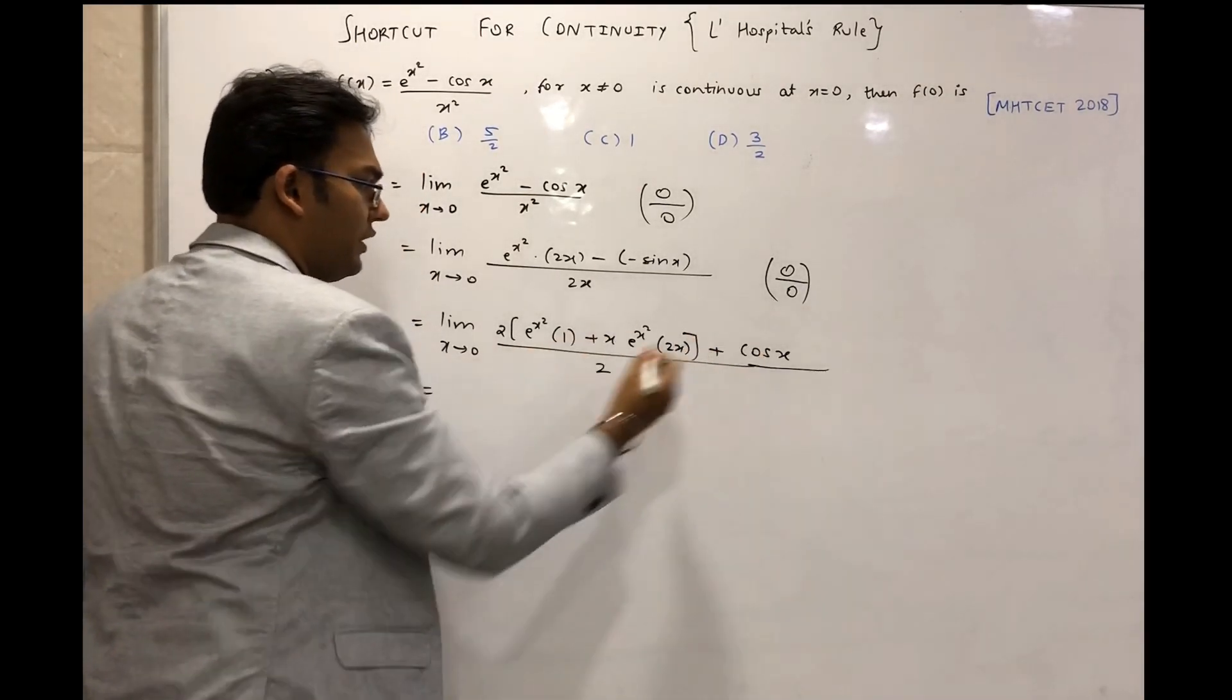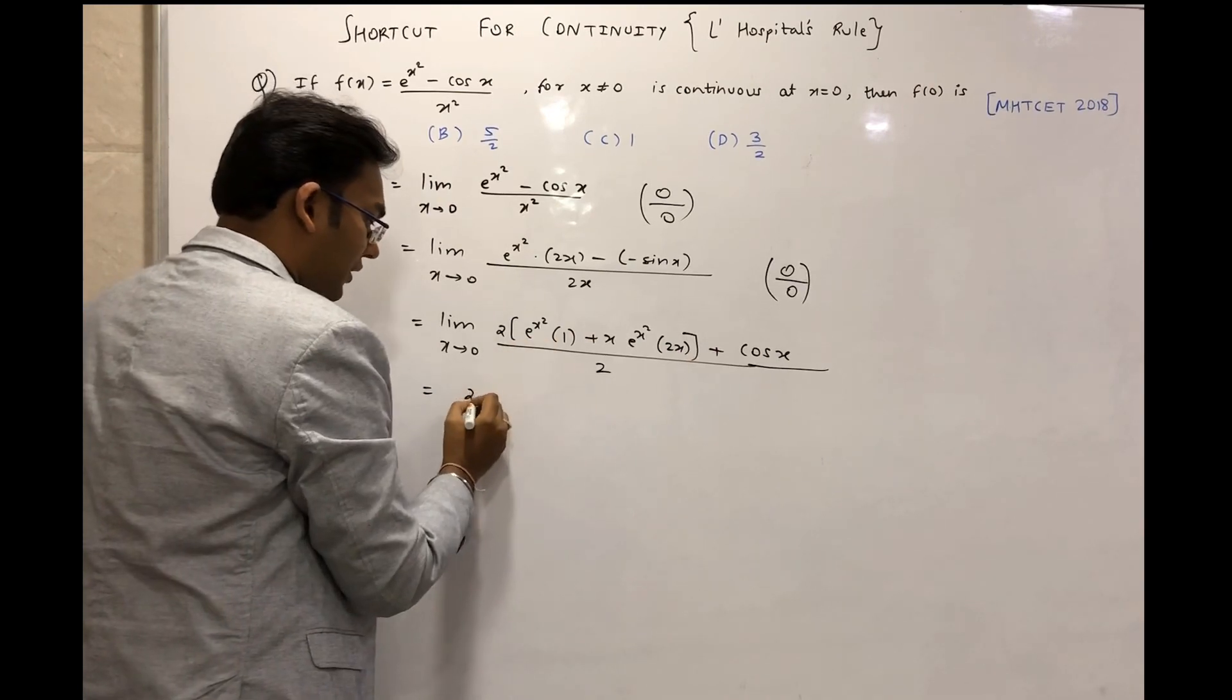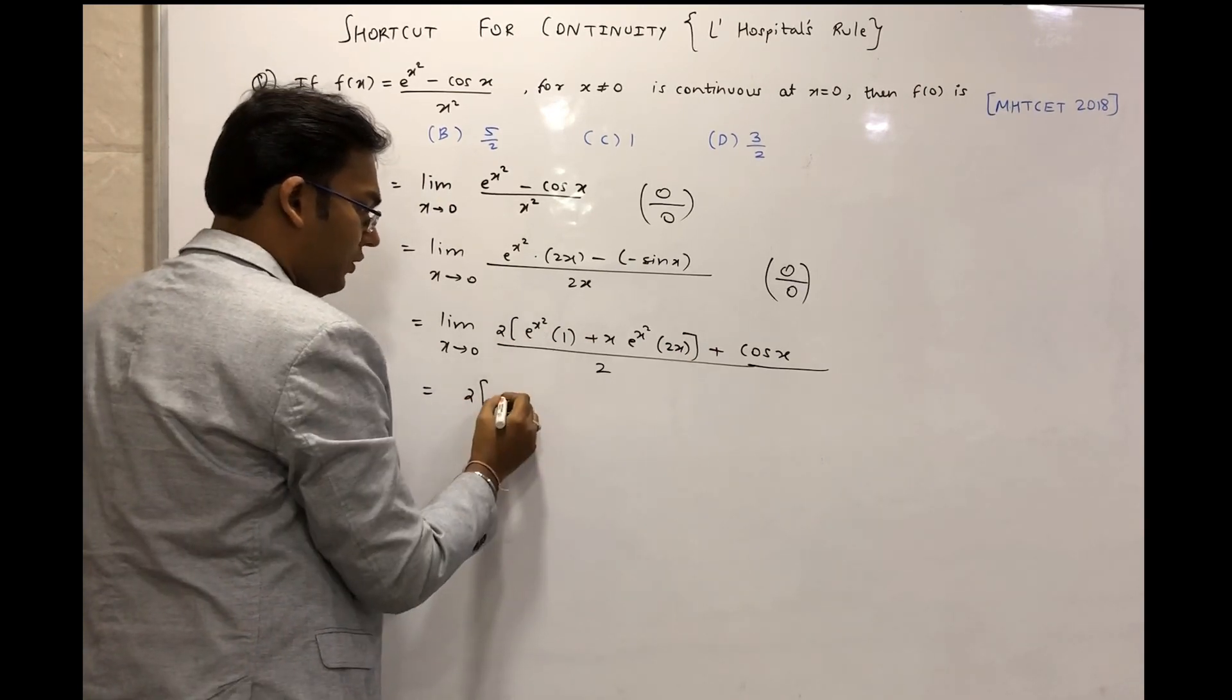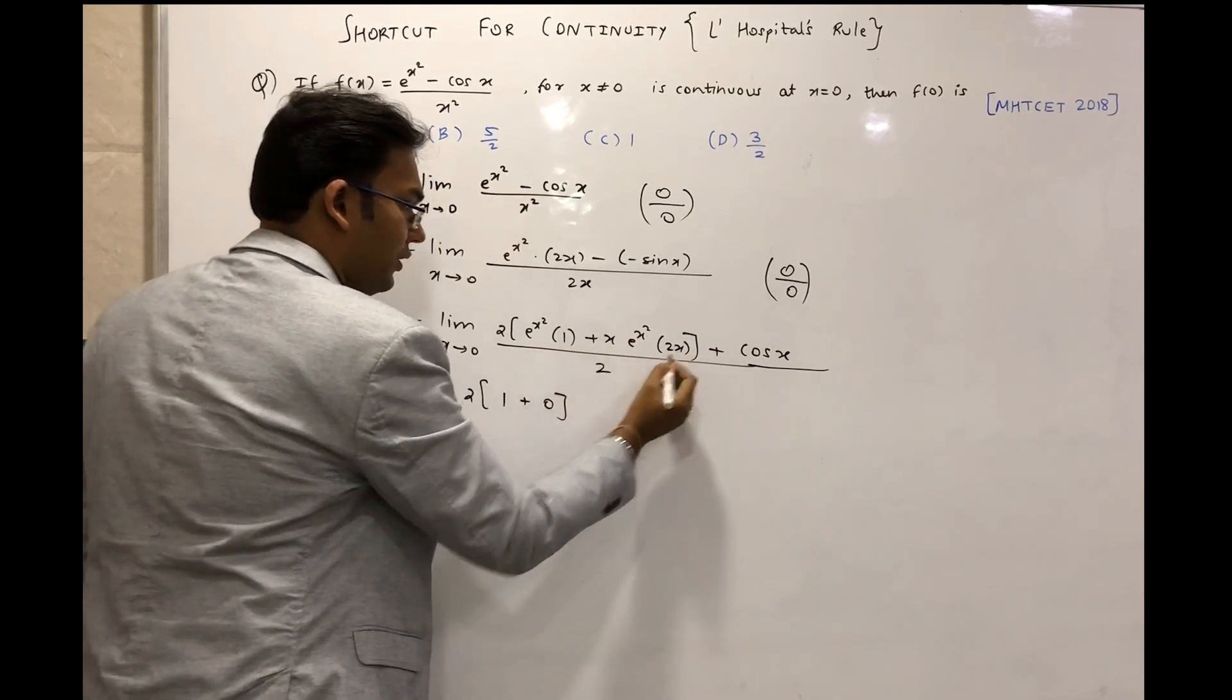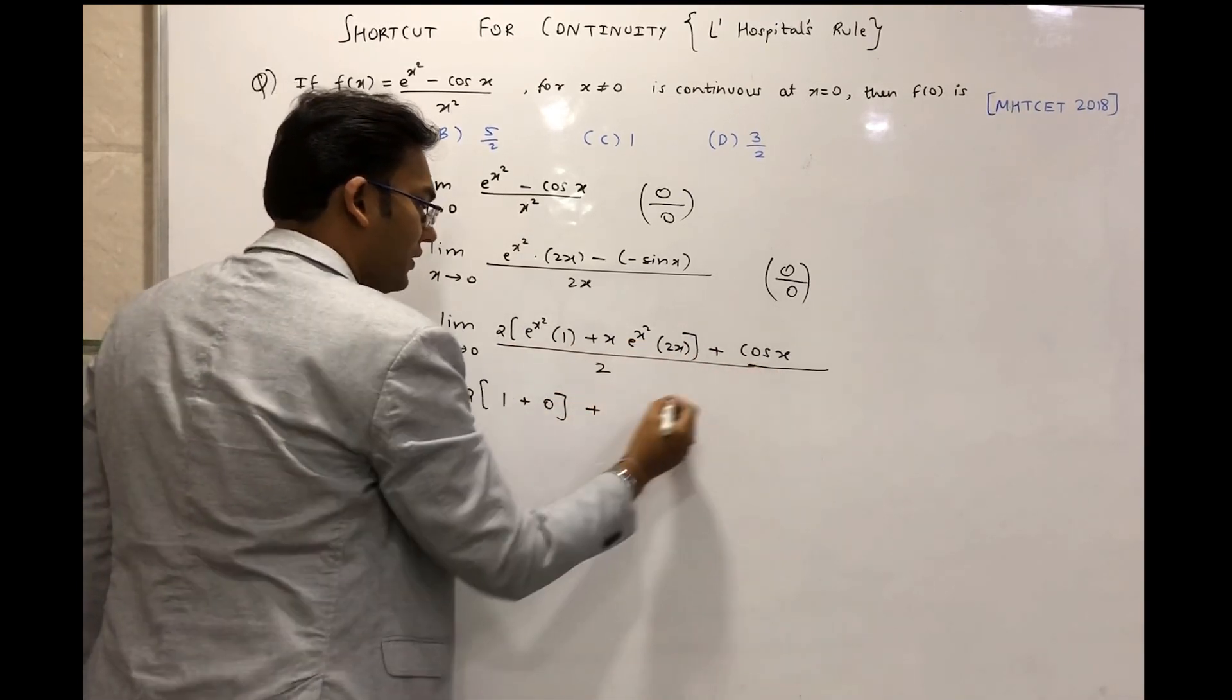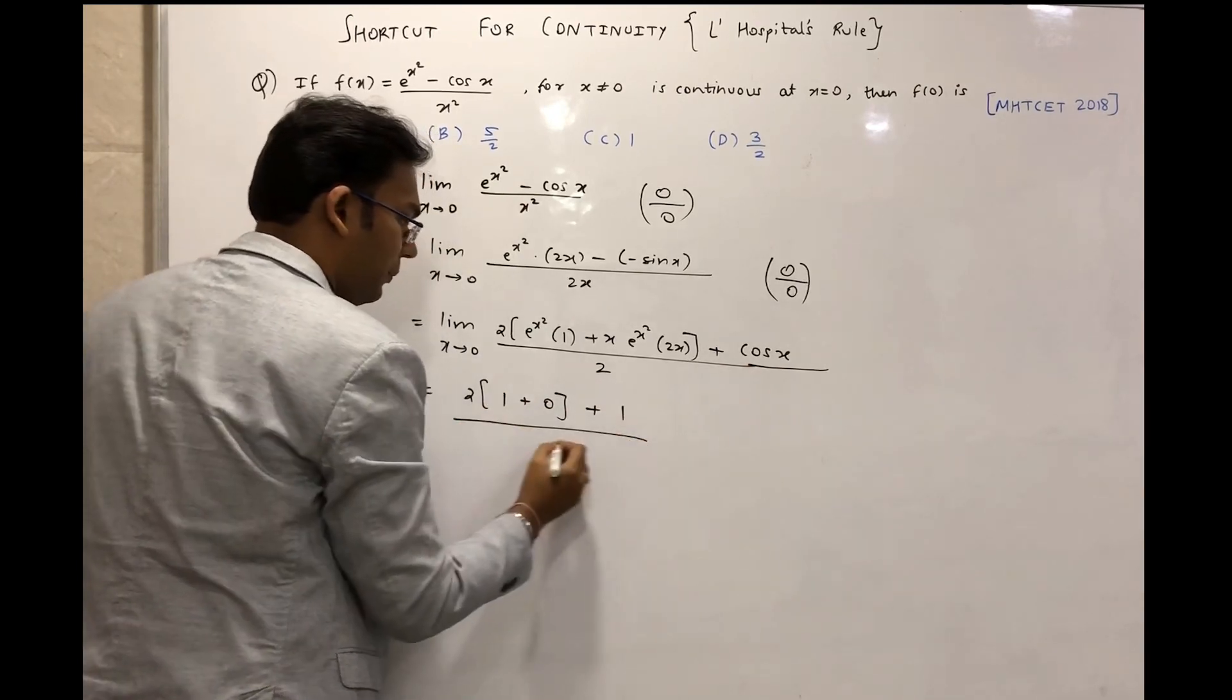So let us substitute x = 0 here. So we'll get 2 times e^0 is 1, plus substitute 0 here so the entire term will be 0, plus cos 0 is 1, the whole upon 2.